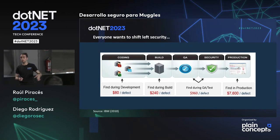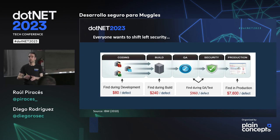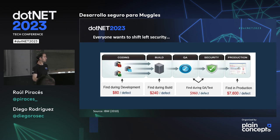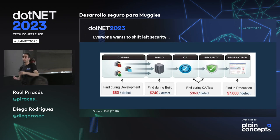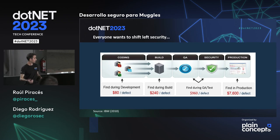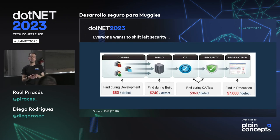Por eso queremos introducir la seguridad lo antes posible en el código. No queremos llegar a los problemas de tener secretos, vulnerabilidades o componentes sin actualizar. Si detectamos un problema en producción puede implicar incluso un cambio de arquitectura o que nos roben una base de datos con las implicaciones legales que eso tiene. Corregir algo en tiempo de desarrollo es mucho más fácil y el coste es mucho más reducido.